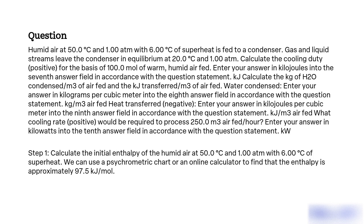Step 1: Calculate the initial enthalpy of the humid air at 50.0°C and 1.0 ATM with 6.0°C of superheat. We can use a psychrometric chart or an online calculator to find that the enthalpy is approximately 97.5 KJ/mol.